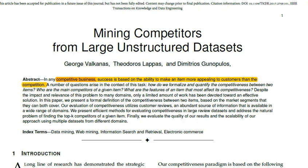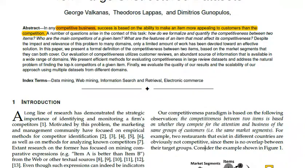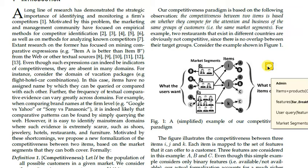This is an IEEE data mining project. The paper title is 'Mining Competitors from Large Hand Structure Dataset.' The main concept of the paper is to find the competitors of an item. Here I'll explain how the concept works — items I, J, K are the items we are considering.